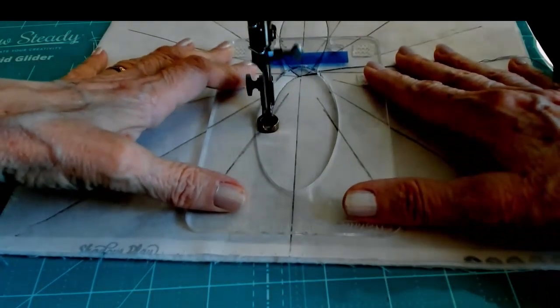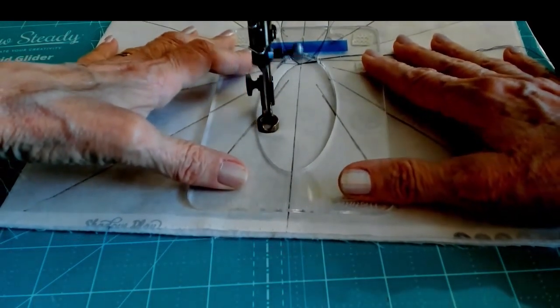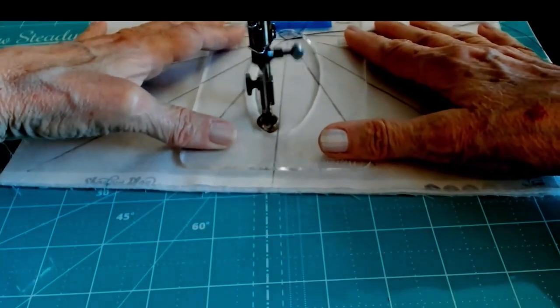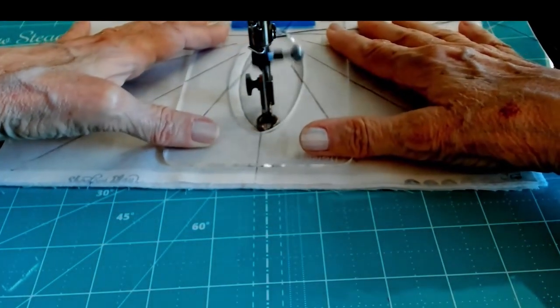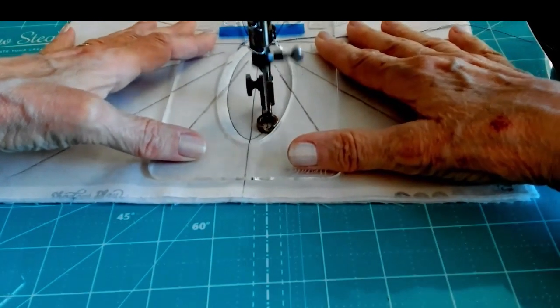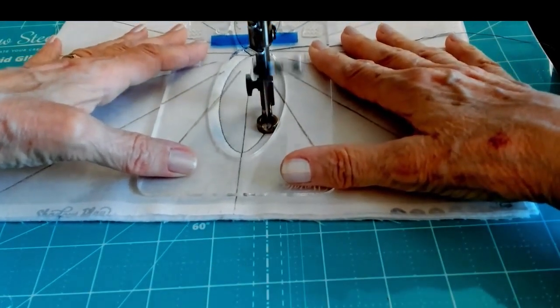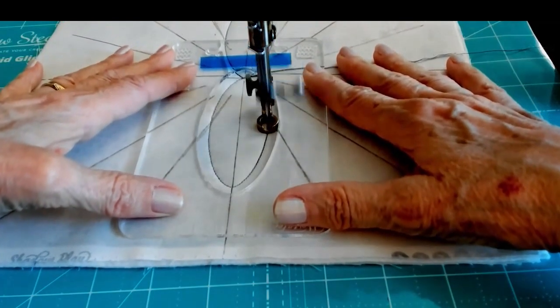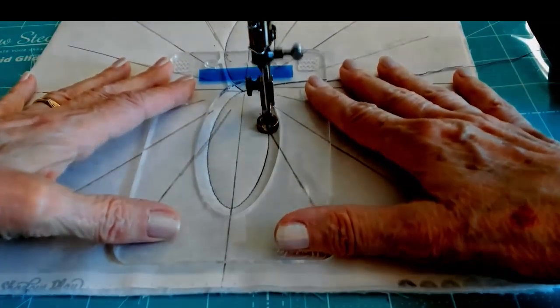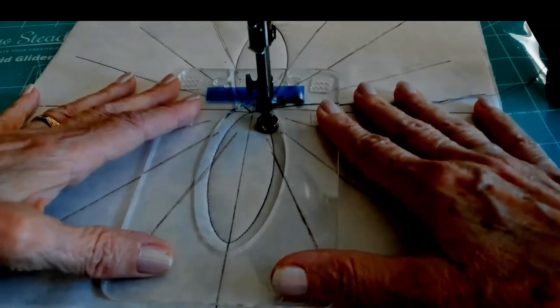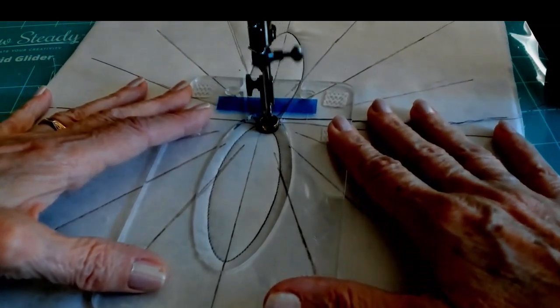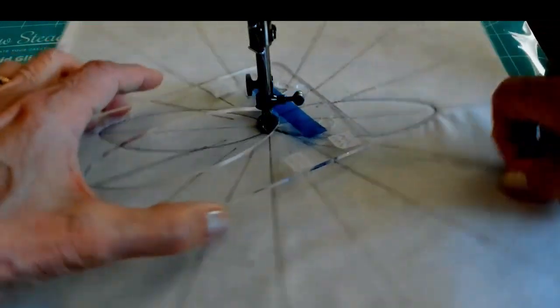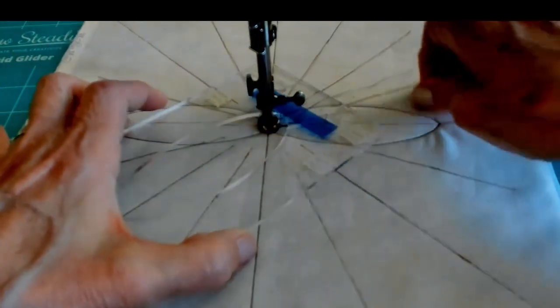And it just looks better in the end. So, here we go. This is rotation number two. Nice and steady. If you're just learning, don't worry about that stitch length. That's going to come with time and practice. Trust me, mine didn't look all that pretty in the beginning. I don't know anyone who did.